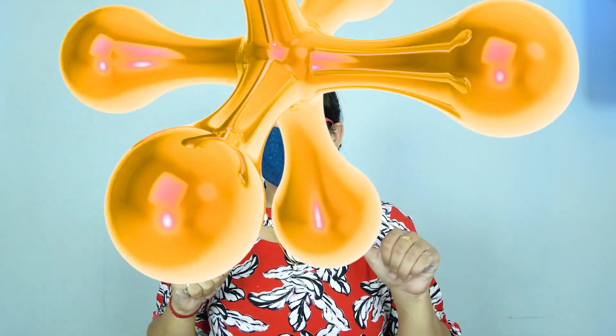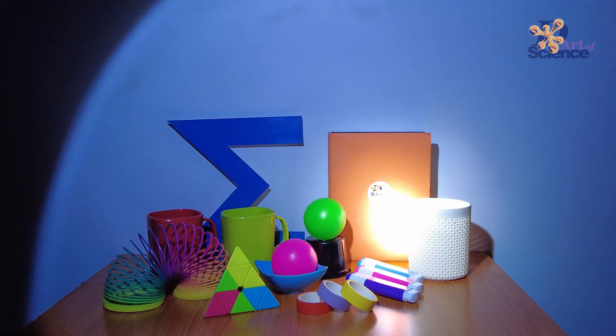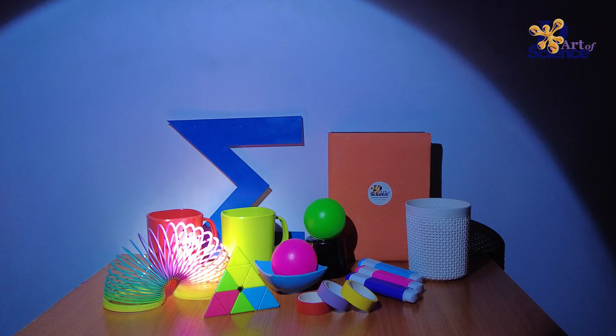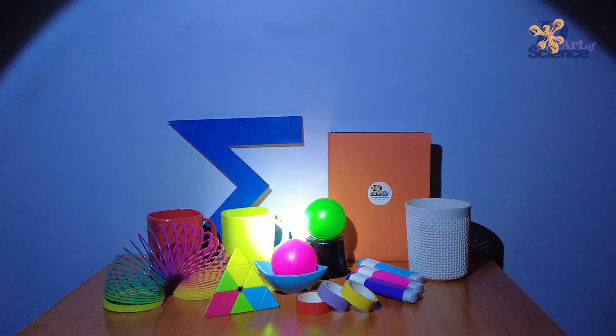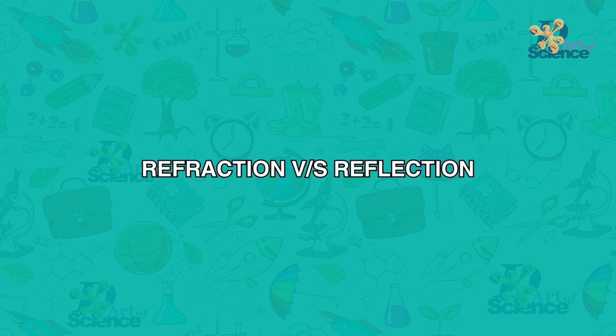Hey guys, I'm Chanthi and you're watching The Art of Science. In today's video, we are going to learn about how light reacts with different types of objects. More particularly, we are going to learn about the difference between refraction and reflection. So let's get started.